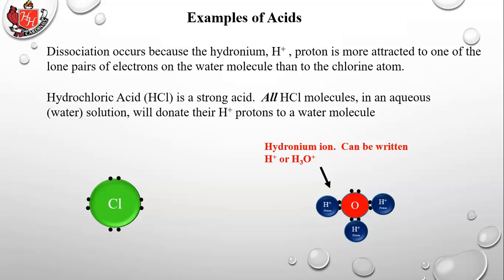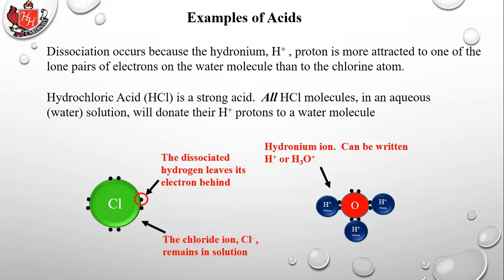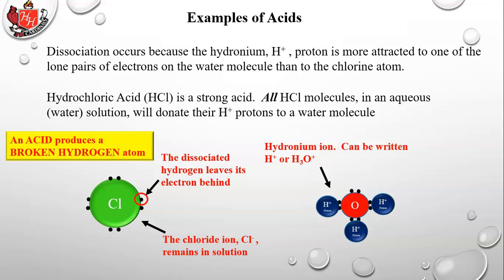The hydronium ion can be written either as H+, just the proton, or H3O+, the entire water molecule with the proton. In chemistry they're treated as exactly the same thing. The dissociated hydrogen leaves its electron behind, and the chloride ion Cl- remains in solution. Simply put, an acid breaks a hydrogen atom in two.